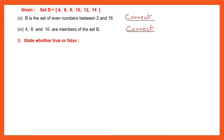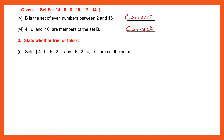Question 3, state whether true or false. Question 1: Sets {4, 9, 6, 2} and {6, 2, 4, 9} are not the same. If they have all the same members, the sets are the same — the order in which they are put does not matter. 4, 9, 6, 2 — all appear in both sets. That means both sets are the same. But the statement says they are not the same. So this statement is false.